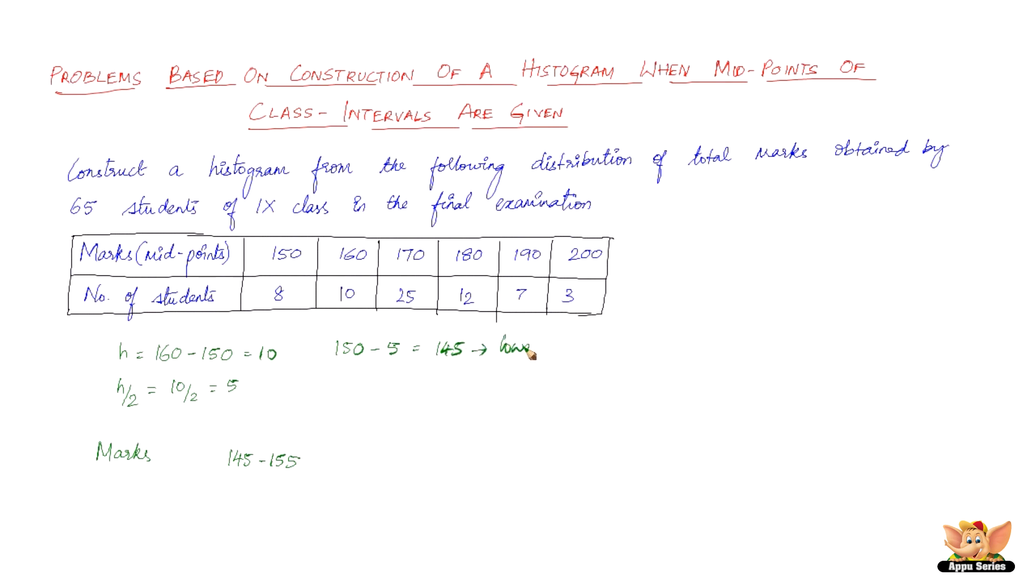This is going to give us the lower class limit, and 150 plus 5 is going to give us 155, which is the upper class limit.